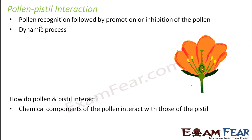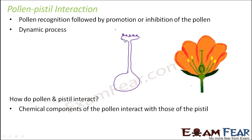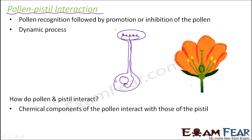All the events which start from pollen deposition on the stigma — the moment the pollen gets deposited — until the pollen tube enters inside the ovule are referred to as pollen-pistil interaction. The interaction starts at the stigma and continues until the male gametes are released inside the ovule. So this is all about the pollen-pistil interaction.